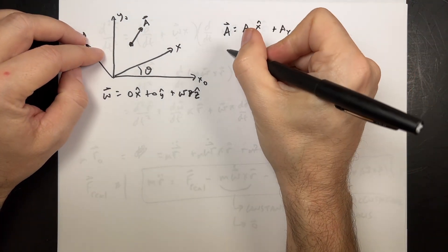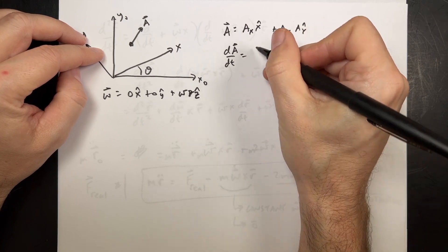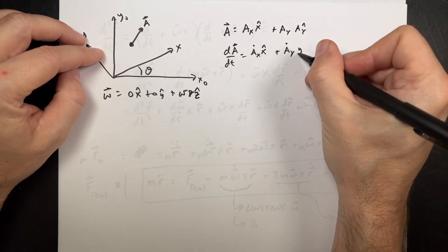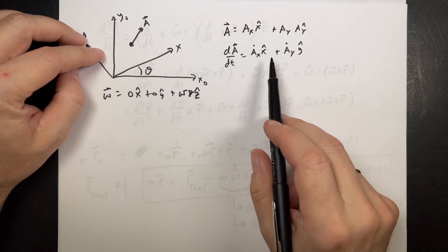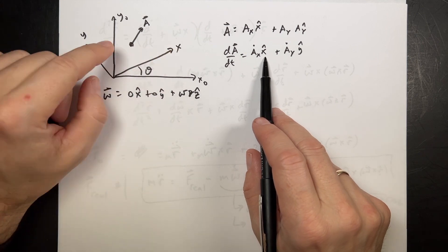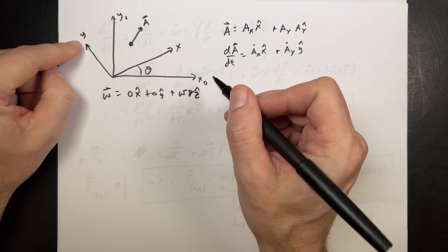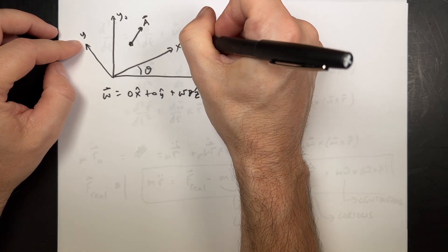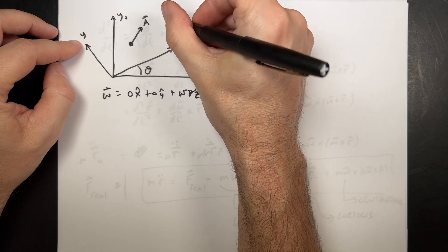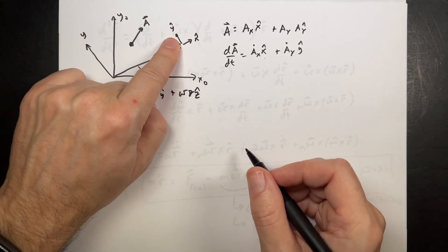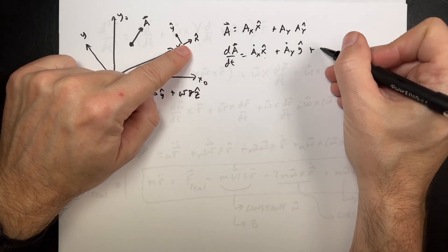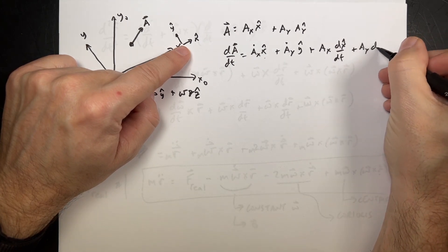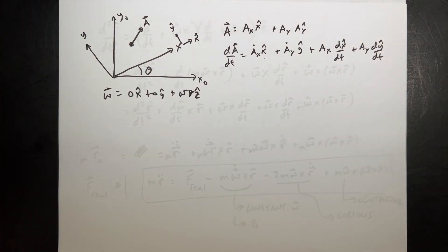Now I want to take the derivative of A. So dA/dt equals A-X-dot X-hat plus A-Y-dot Y-hat. But these unit vectors X-hat and Y-hat are with respect to the rotating S frame, not the stationary S-zero frame. As theta changes, X-hat and Y-hat change. So I also have to include A-X times the derivative of X-hat with respect to time, plus A-Y times the derivative of Y-hat with respect to time.